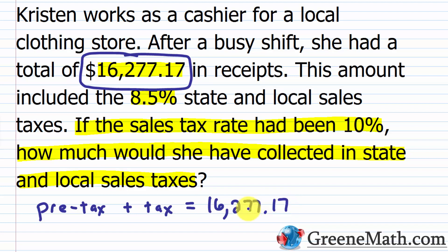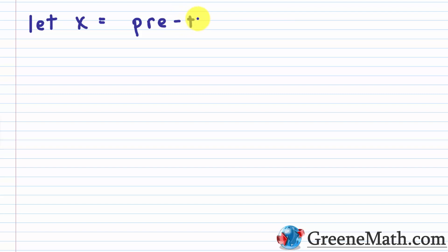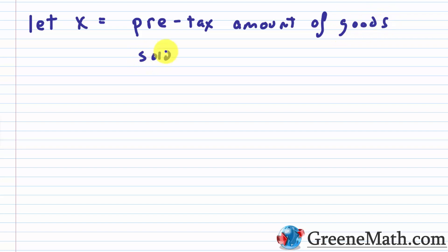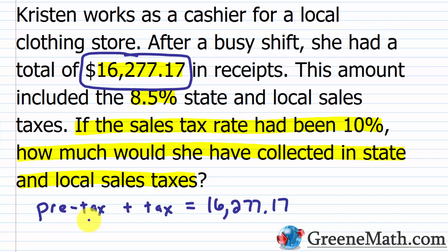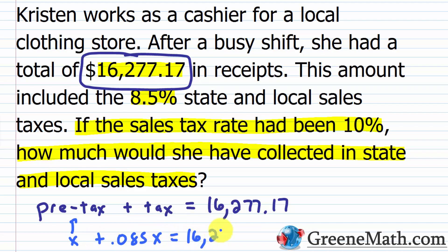I'm going to let x equal the pre-tax amount of all the goods sold. The pre-tax amount is x, plus the tax amount. If she sold x amount of goods and the tax is 8.5%, I multiply 8.5% times that pre-tax amount, which is x. As a decimal, 8.5% is 0.085. So x plus 0.085 times x equals 16,277.17.